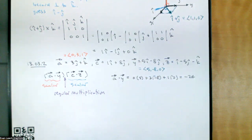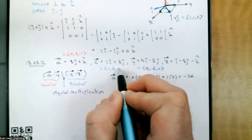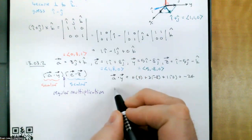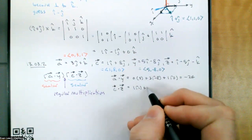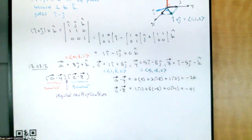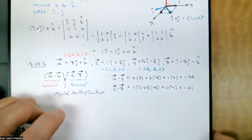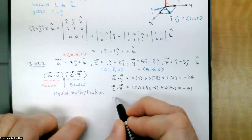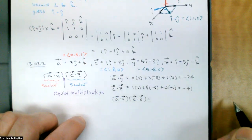We'll do the same thing for C and Z. Z has all three components, but C only has two — it's (1, 8, 0) since there's no k component. So C · Z = (1)(1) + (8)(−5) + (0)(−1) = 1 − 40 = negative 39. Wait — that gives us negative 39, not negative 41. So the final answer is A · Y times C · Z = (−24)(−39).